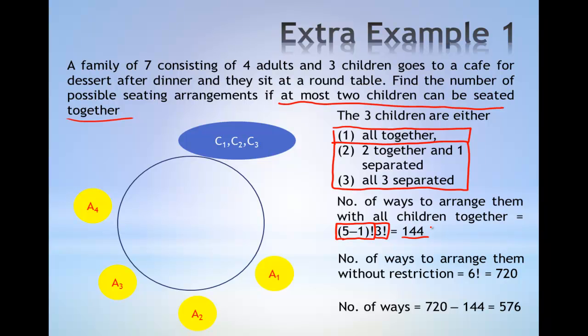The number of ways to arrange them without restriction is 6! = 720. By considering the complement, the total number of ways to arrange with at most two children seated together is 720 - 144 = 576.